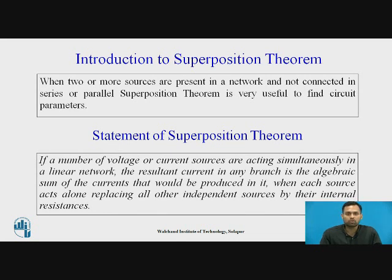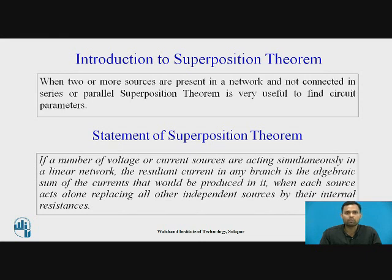In Superposition Theorem, if we want to find out current through a circuit element, the condition is that sources must be two or more. We analyze the effect of each source individually while the remaining sources are deactivated. When deactivating, a voltage source is replaced by its internal resistance, and a current source is deleted.